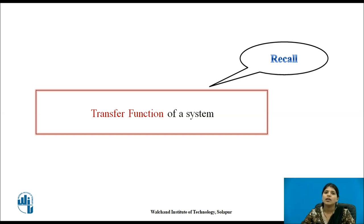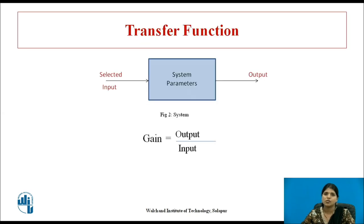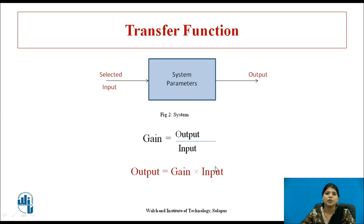Now recall what is the transfer function of a system. The system parameters are designed and their values are selected as per the requirement of input. Therefore, the performance of system parameters are expressed in terms of their output. So gain is equal to output upon input, or the Laplace transform of output to the Laplace transform of input. So output equals gain times input, and gain is nothing but the performance of the system parameters.